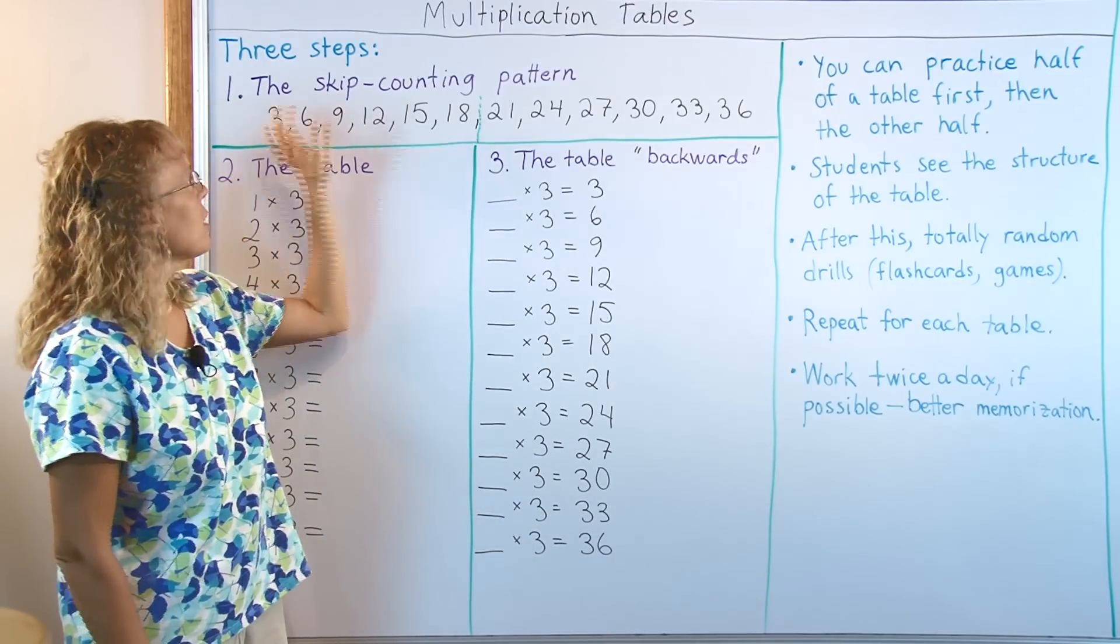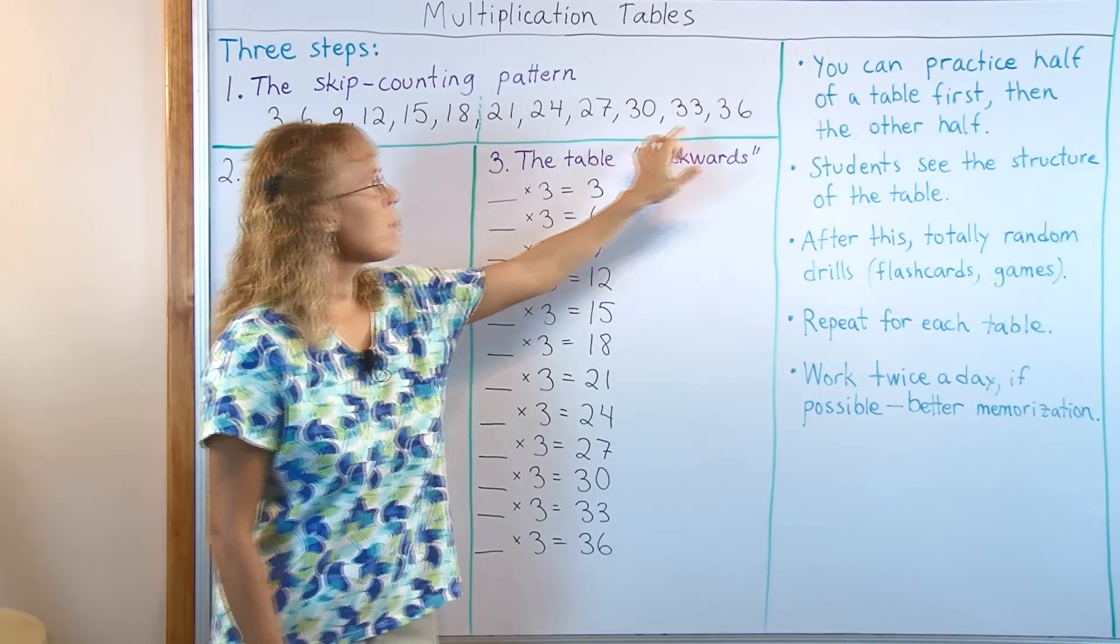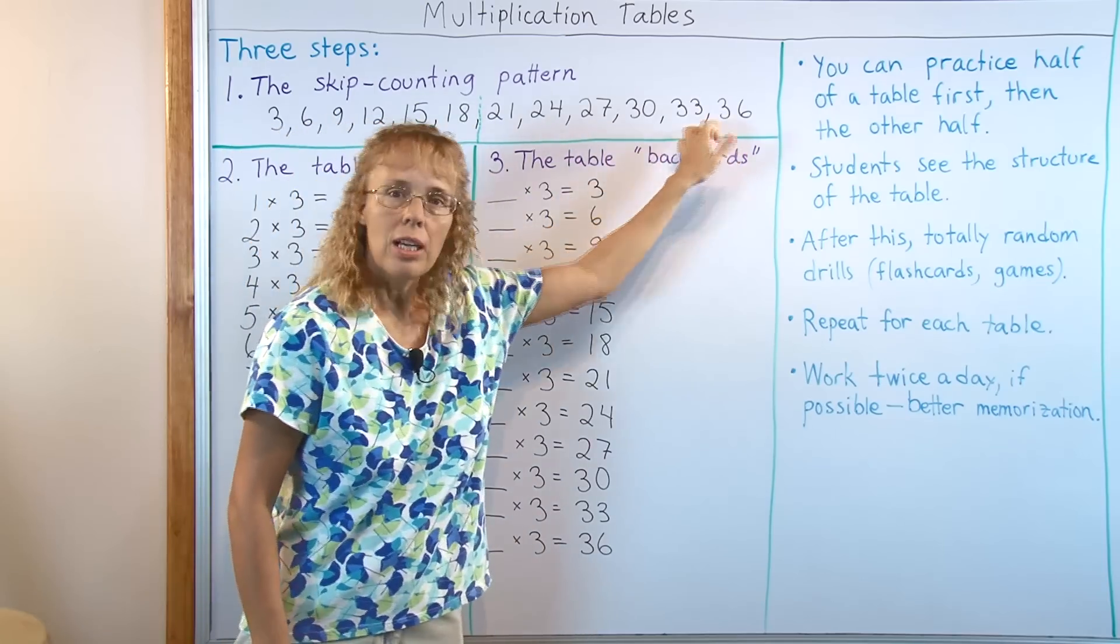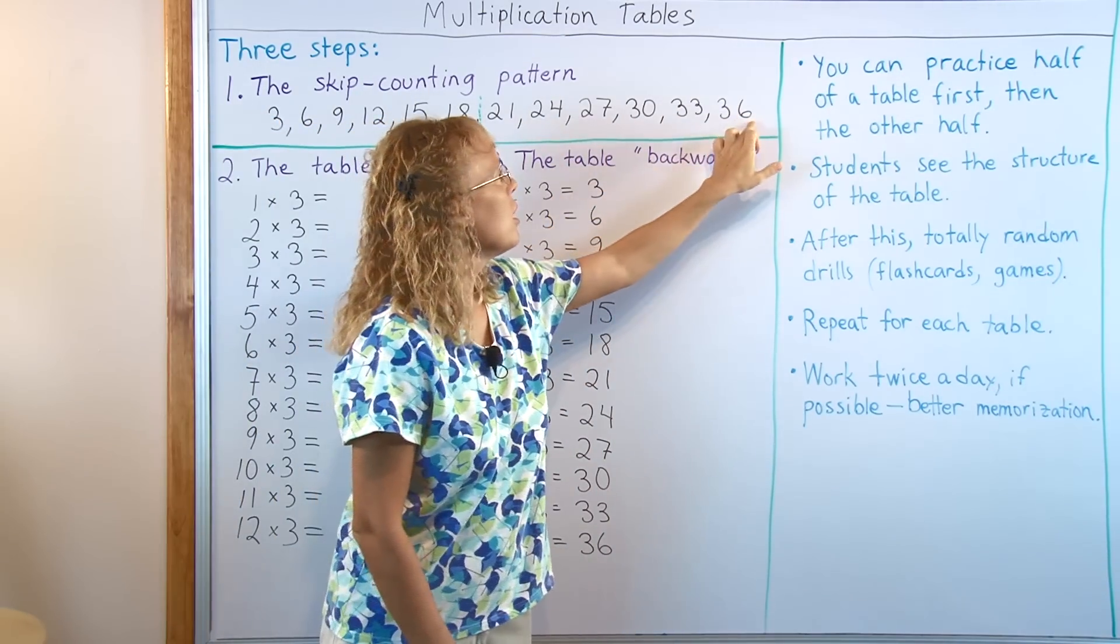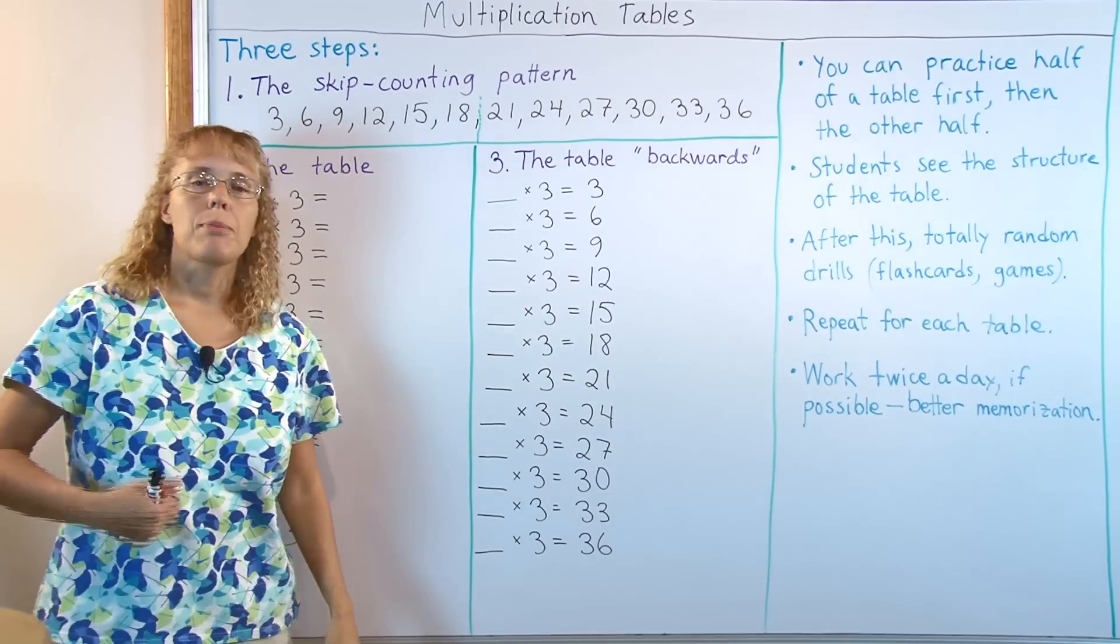When they have memorized this part then they can work on this part and memorize this list of numbers and then finally be able to say from memory this whole list of numbers forwards and backwards. The skip counting pattern.